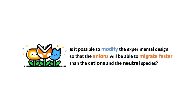Hey guys, Francis here. In the previous video, we were left with this question: Is it possible to modify the experimental design so that the anions will be able to migrate faster than the cations and the neutral species? If it's possible, how do we achieve this?